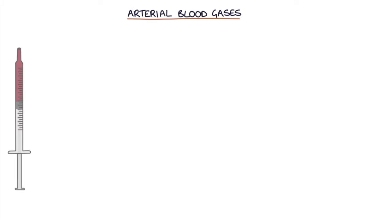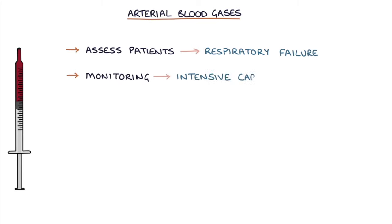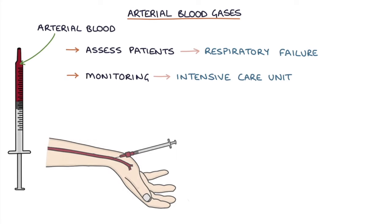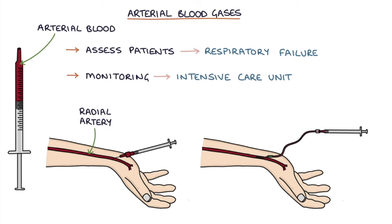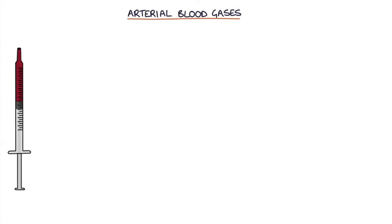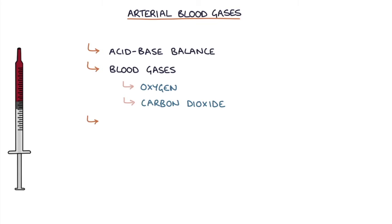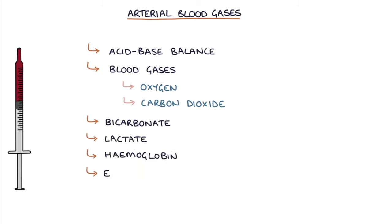Arterial blood gases, or ABGs, are very commonly used to assess patients with respiratory failure and for monitoring in the intensive care unit. An arterial blood sample is required for analysis, and this involves inserting a needle either into the radial or the femoral artery. Arterial lines make it very easy to obtain an arterial blood sample and are very common in the ICU. ABGs give useful information about the acid-base balance, the blood gases such as oxygen and carbon dioxide, the bicarbonate, the lactate, the haemoglobin, and the electrolytes.